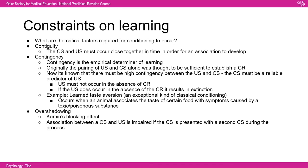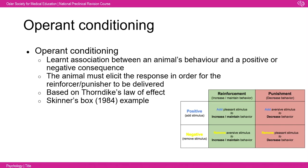Operant conditioning is the second key type. Stimuli present when a behavior is rewarded or punished can control that behavior — a child may learn to open a box to get candy or avoid touching a hot stove. The discriminative stimulus is consistently used to gain a specific response, increasing the probability of that result. Operant conditioning depends on the learned association between behavior and a positive or negative consequence — the animal must elicit the response for the reinforcer or punisher to be delivered. This is based on Thorndike's law of effect.